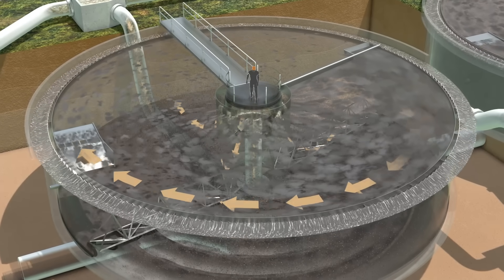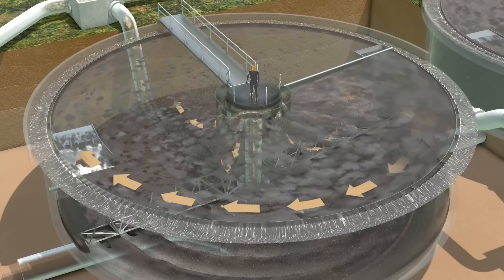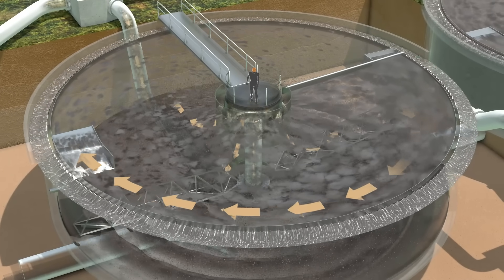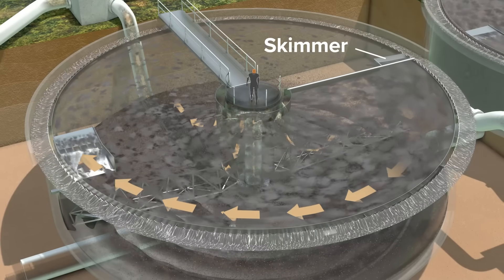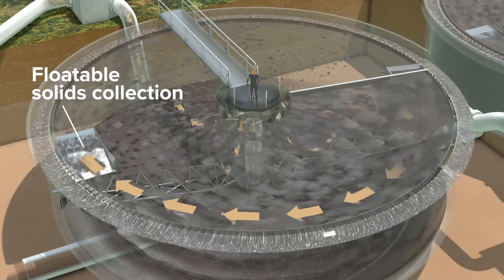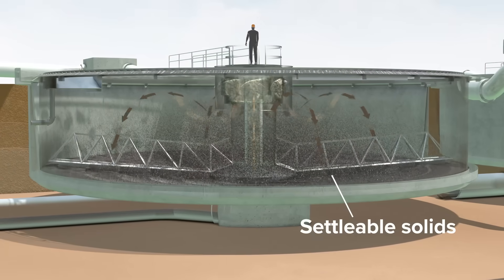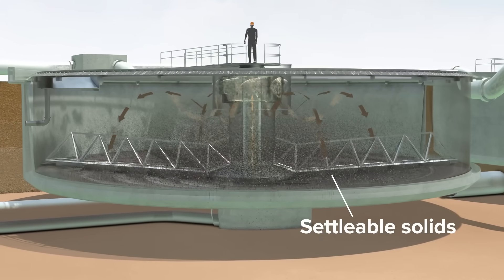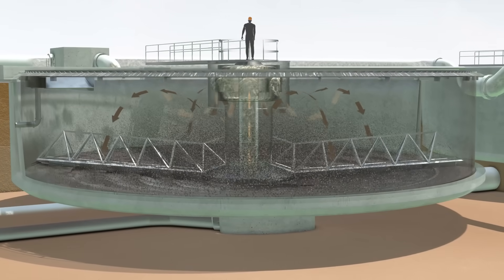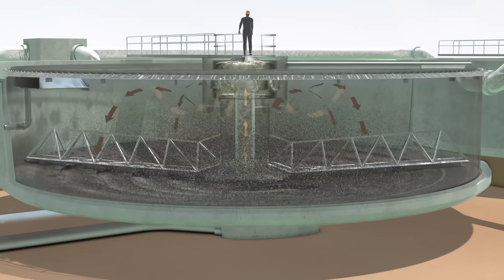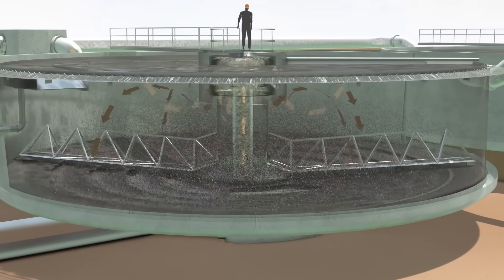Floatable solids, like grease and oil, drift to the top of the tank. A rotating skimmer continually pushes this material into a collection trough. Settleable solids sink to the angled bottom of the tank and form a sludge. Scraper arms push the sludge out of the tank into a sludge pit.